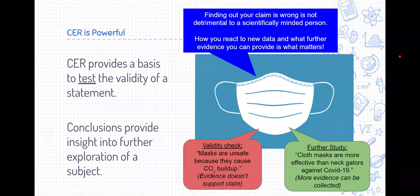And the reason I'm saying this is because a lot of students get really frustrated when they find out that maybe their claim or they're worried that their claim is wrong, and that's not detrimental to a scientifically-minded person. If we end up having a wrong claim, that's just information. We learn more. We collected more evidence. It's how you react to new data and what further evidence you can provide. That's what truly matters in science.